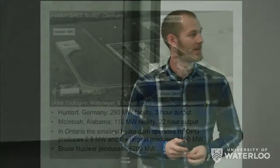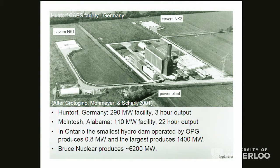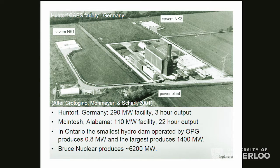As we were talking about the Huntorf CAES facility in Germany — this is a picture of it above — it's a 290-megawatt facility rated for three hours of power production. You can see the two cavern wellheads at the top and the facility itself below. The other example Maurice mentioned was the McIntosh, Alabama facility, which is a 110-megawatt, 22-hour rated output facility. To give you a scale, in Ontario, OPG operates hydro dams ranging from 0.8 to 1,400 megawatts, and the large nuclear power plant generally produces 6,200 megawatts.